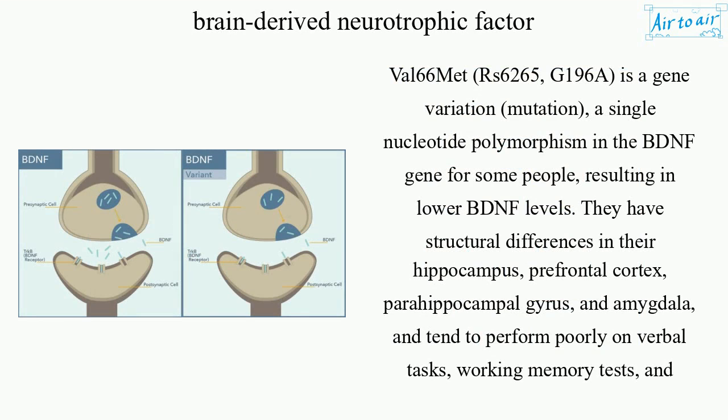Val66Met (Rs6265, G196A) is a gene variation — a single nucleotide polymorphism in the BDNF gene for some people, resulting in lower BDNF levels. They have structural differences in their hippocampus, prefrontal cortex, parahippocampal gyrus, and amygdala, and tend to perform poorly on verbal tasks, working memory tests, and spatial tasks.